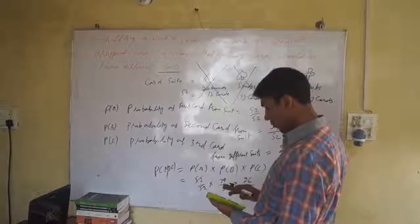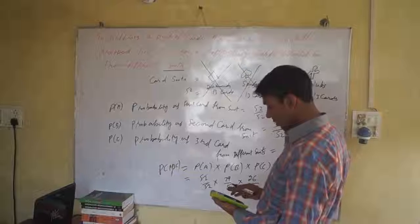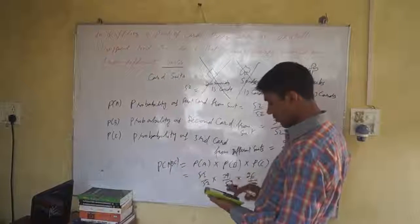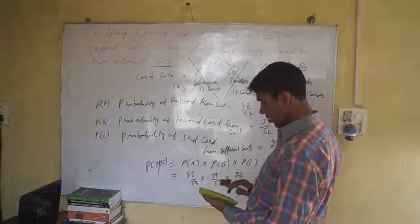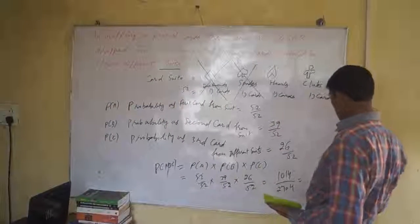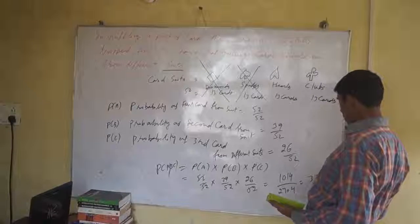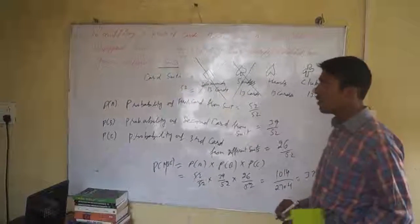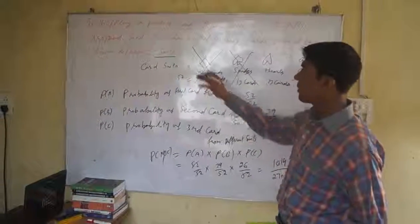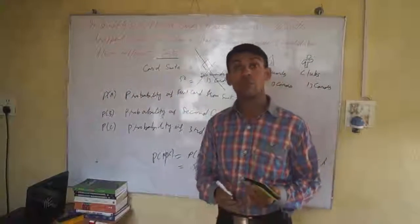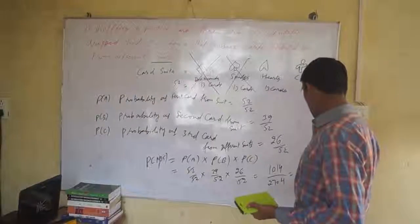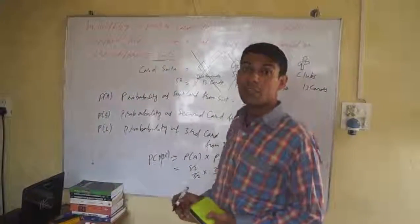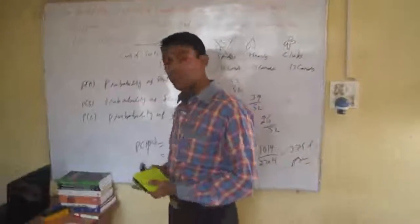This is equal to 0.375. The chance is 37.5 percent of the three cards being from different suits. Its probability is 37.5%. Okay, thank you.